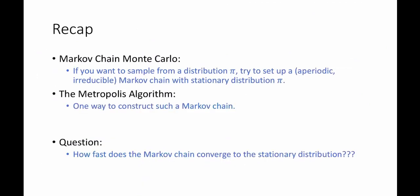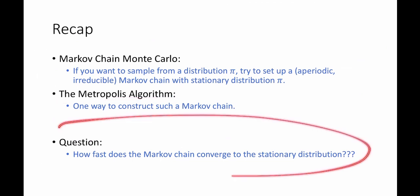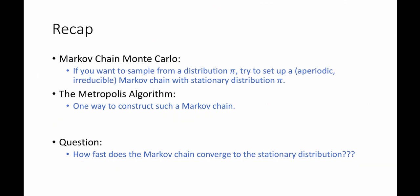To recap, in this video we saw Markov chain Monte Carlo. The basic idea is that if you want to sample from some distribution pi, you can set up an aperiodic irreducible Markov chain whose stationary distribution is pi. By the fundamental theorem of Markov chains, walking long enough will converge to that distribution. It's not always obvious how to construct such a chain, but the Metropolis algorithm tells you how. One question that remains is how fast this chain actually converges — if it converges quickly, this gives an efficient sampling method; if it takes a very long time, it isn't helpful. We'll leave that for a future video.